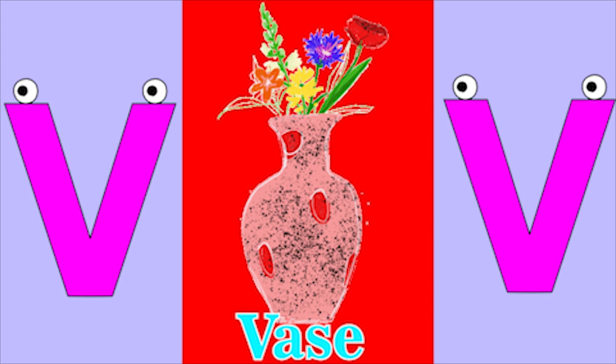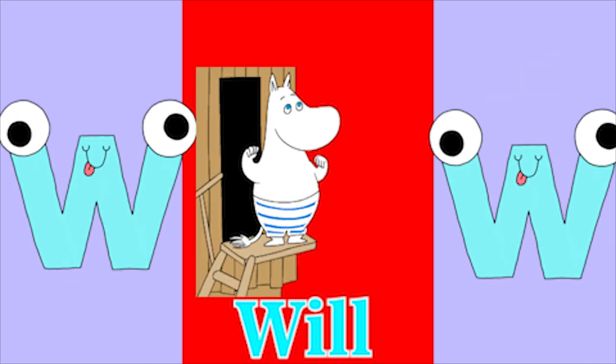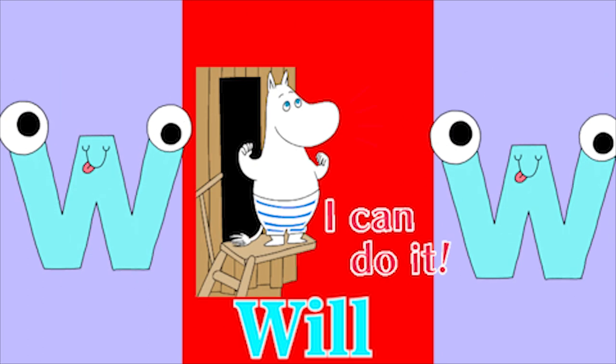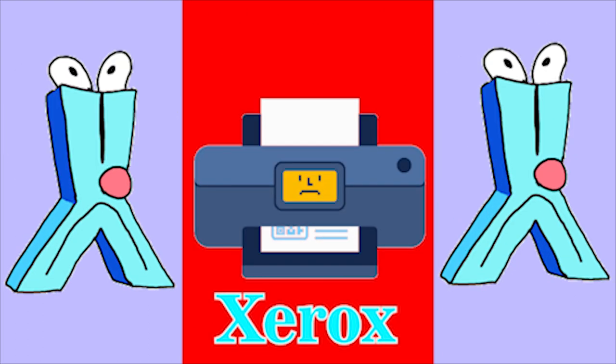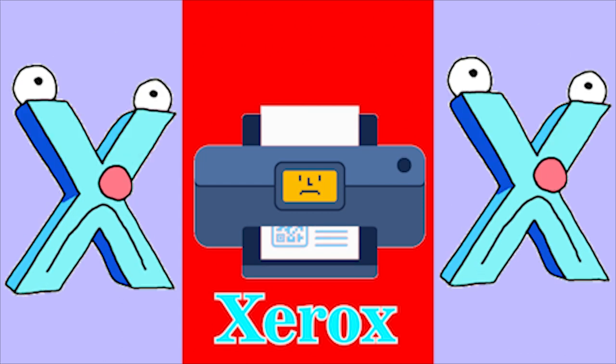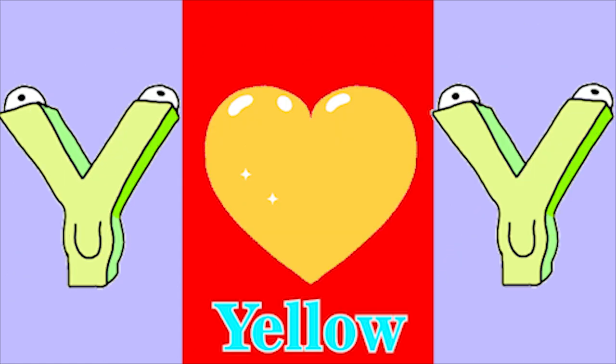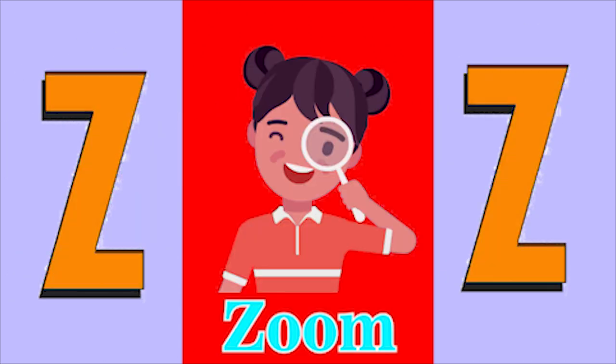V for vase, W for whale, X for zero, Y for yellow, Z for zoo.